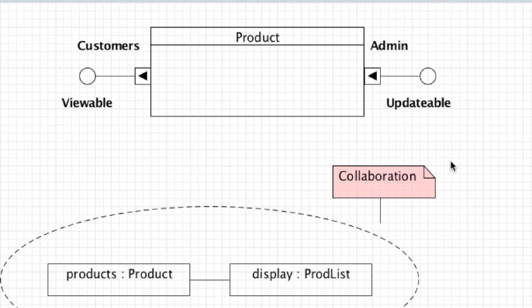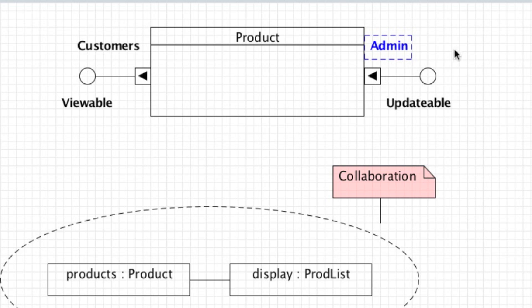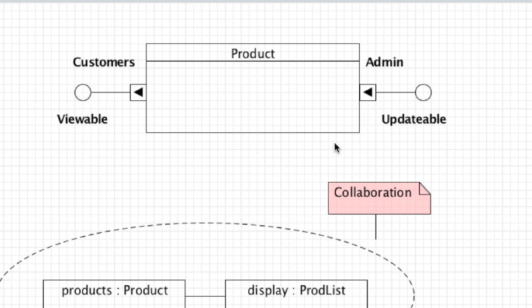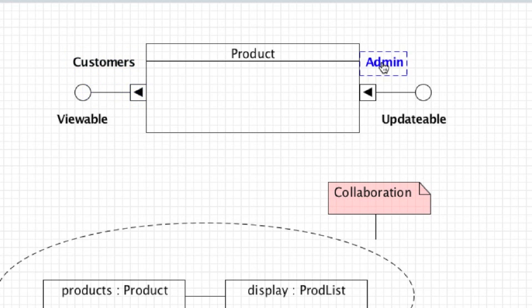Just like before, we also have ports with composite structures. Ports are going to connect your class to other outside classes, and also like before these classes are going to have interfaces and more than likely specific names for each port to designate what the different interfaces do. In this situation we have our product class — customers are going to be able to view these interfaces named 'viewable' and 'updatable.' We'll likely have multiple interfaces for the administrator and for the customer. The customer name here is tied to this port, and admin is tied to all the interfaces that come out of that port.